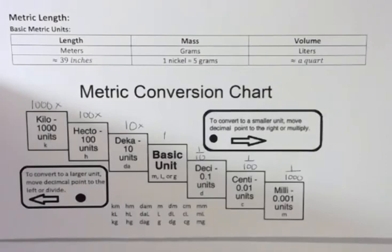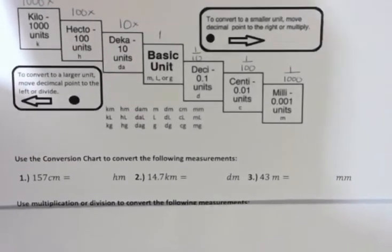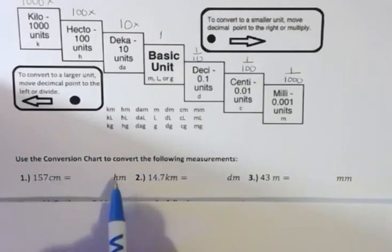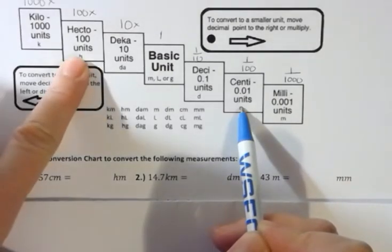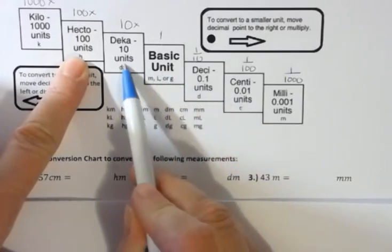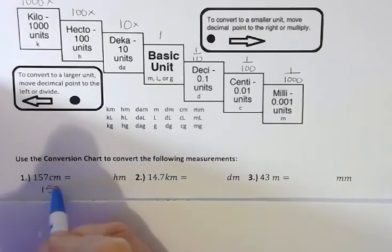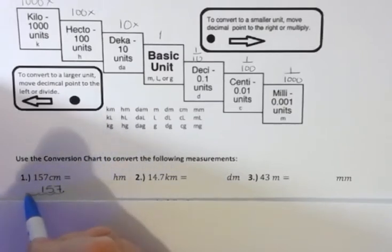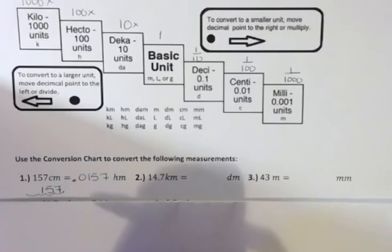Let's try converting using the chart. If I have 157 centimeters and I want to change it into hectometers — here's centimeters, and hectometers is over here — that's four places to the left. My original decimal point is at the end, so I move it four places to the left: one, two, three, four. That gives me 0.0157, or 157 ten-thousandths of a hectometer.